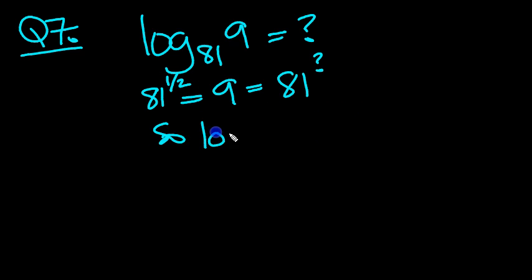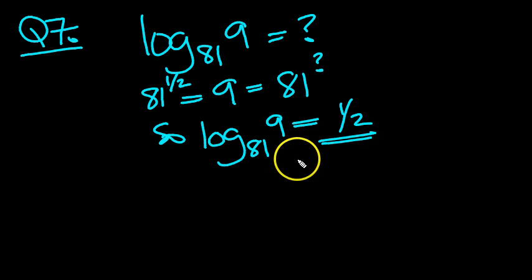So log of 81 of the number 9 equals half. Raise 81 to the power of half to get 9. Good.